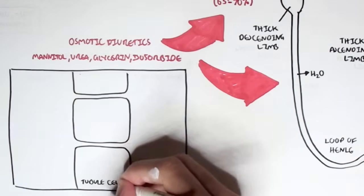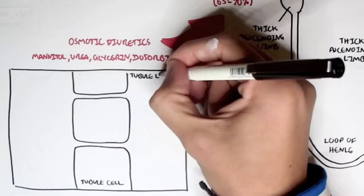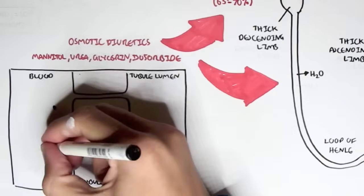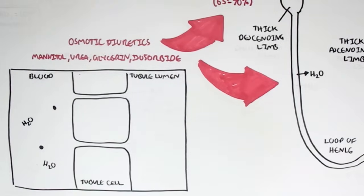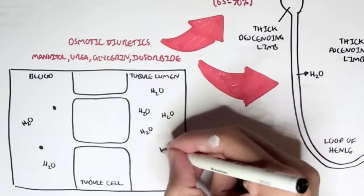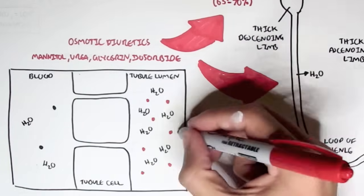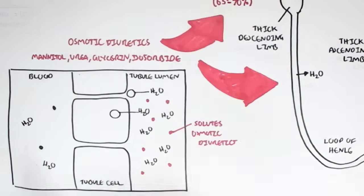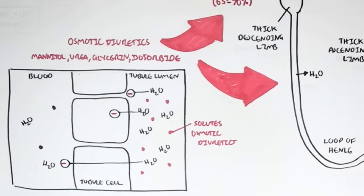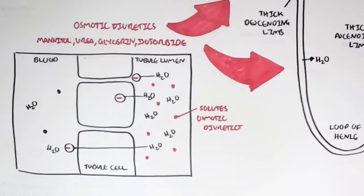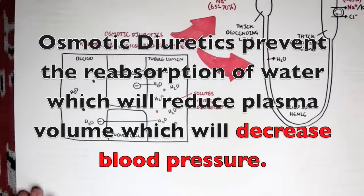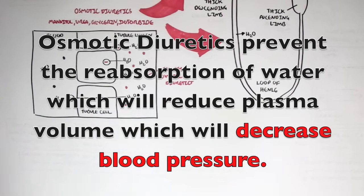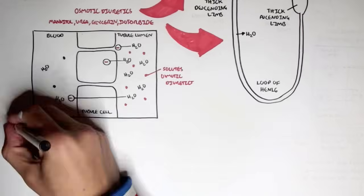Here we have the cells lining the tubule, the tubule lumen inside the nephron, and the blood outside. In the blood, we have two solutes and two waters, for example. But in the tubule lumen, we have many solutes — such as mannitol or urea — and therefore there will be a lot of water, so water will not be reabsorbed because it must follow the osmosis rule — hence the name osmotic diuretics. Osmotic diuretics prevent the reabsorption of water from the tubule into the blood, and therefore decrease blood volume and blood pressure.